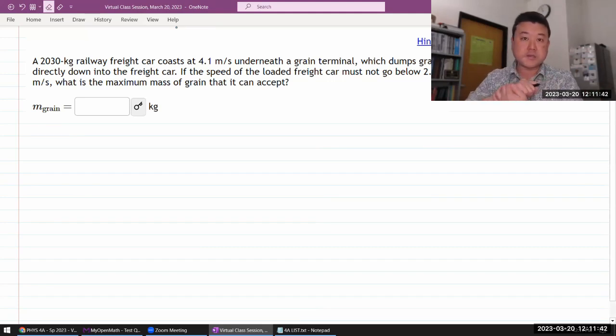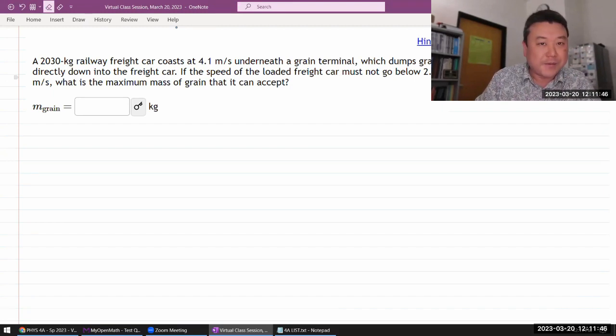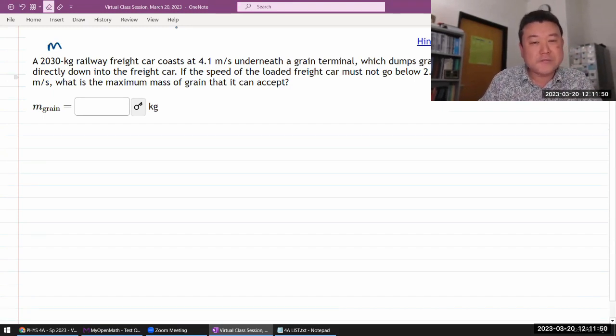Okay, so this question says a 2,000 kilogram railway freight car coasts at some initial speed, let me say V1, underneath a grain terminal.